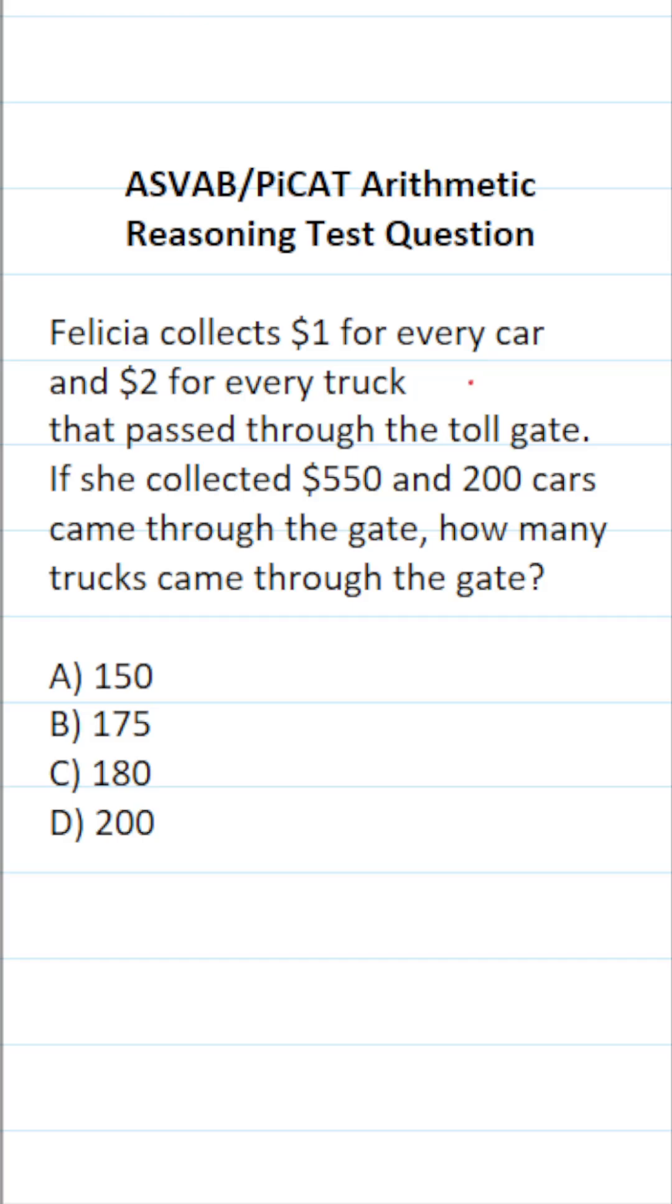This arithmetic reasoning practice test question for the ASVAB and PICAT says: Felicia collects $1 for every car and $2 for every truck that passed through the toll gate. If she collected $550 and 200 cars came through the gate, how many trucks came through the gate?